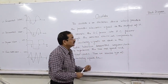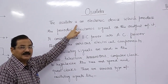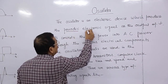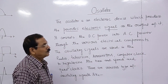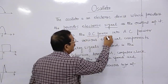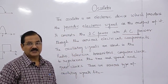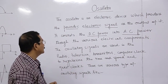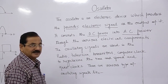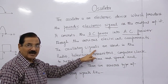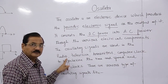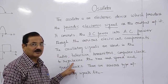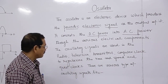The oscillator is an electronic device which produces a periodic electronic signal as output, converting DC power to AC power. Without any input signal it gives an output periodic electronic signal — this is the speciality of the oscillator. Oscillating signals are used in radio, television, transmission, transmitters, computer clocks to synchronize processing speed, and quartz clocks.